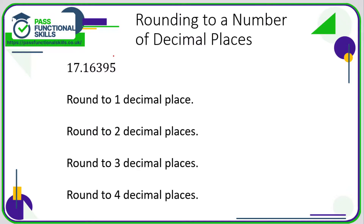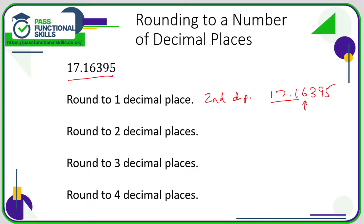Let's take a look at rounding. We've got the number 17.16395 and we're rounding to one decimal place. When rounding to one decimal place, we're really interested in the value of the second decimal place. We're only interested in the 6 — the 395 we can completely forget about. If this number is 5 or greater, the column to the left moves up one. Here the number is 6, which is greater than 5, so this rounds up.